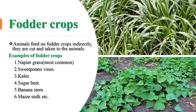The second type of feed is the fodder crop. Fodder crops are cut and taken to the animal to feed on — animals feed on fodder crops indirectly. Examples of fodder crops include napier grass, kale, sugar cane, sugar beets, maize stalk, banana stem, and many more.